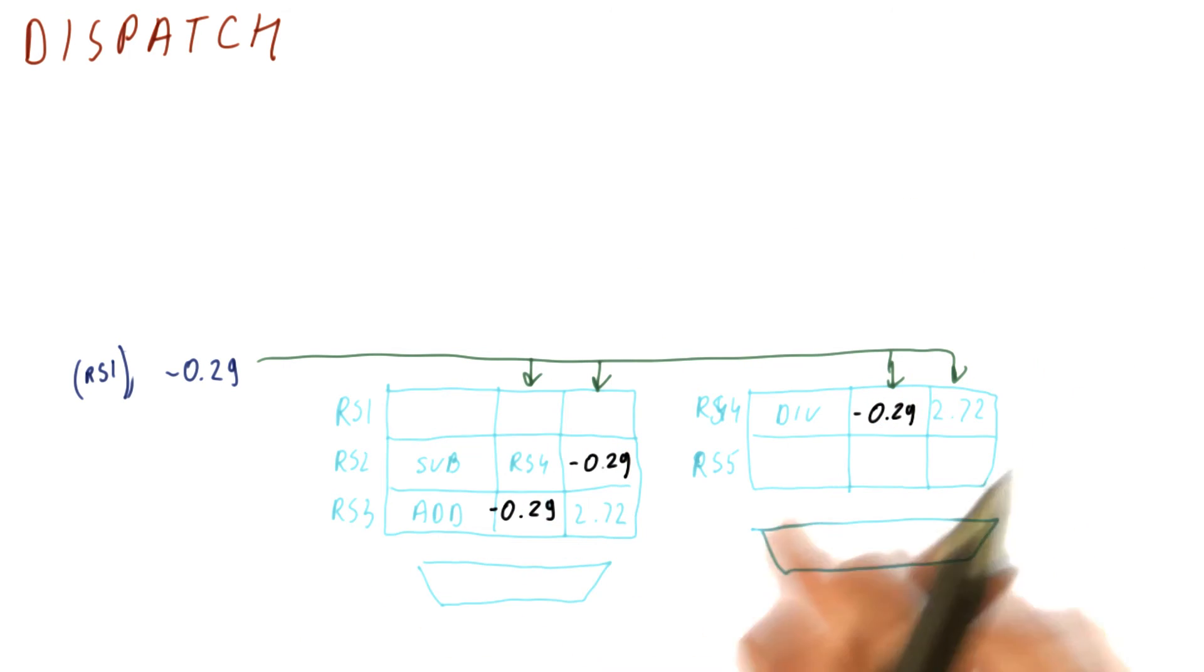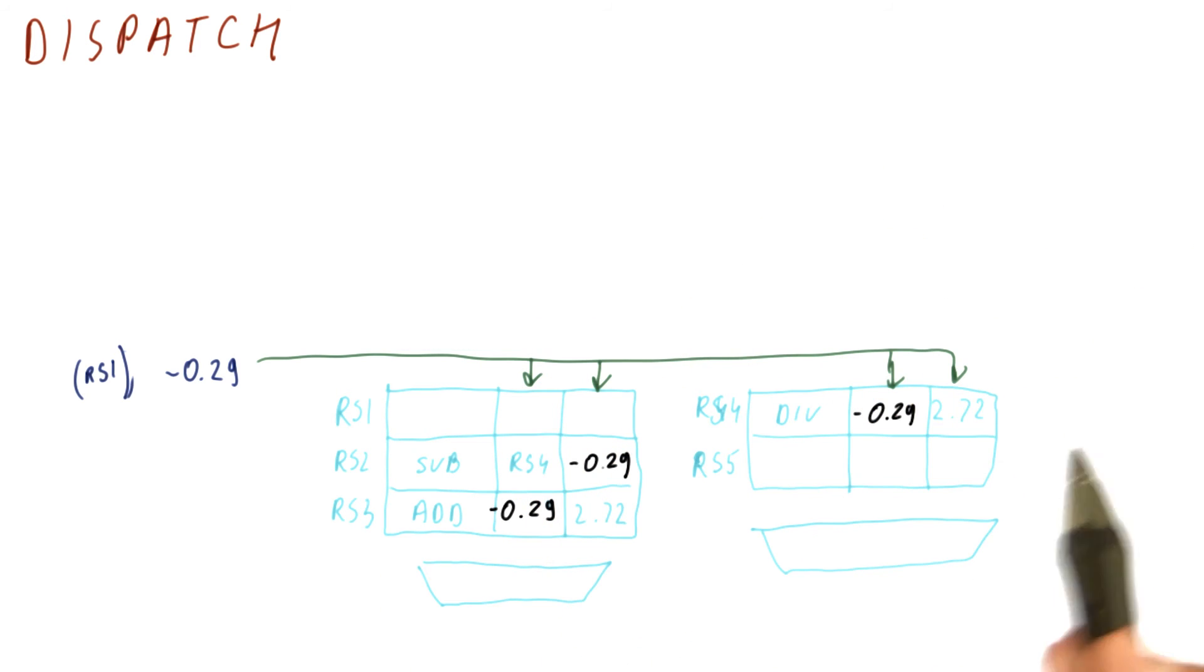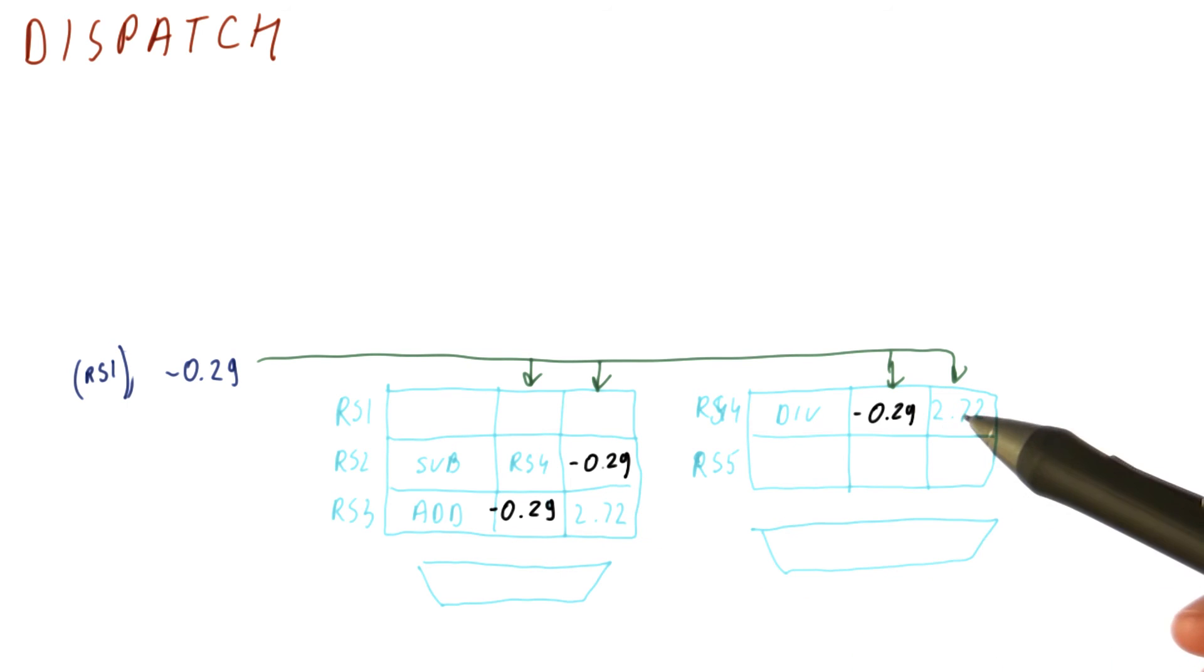So this completes basically what happens when a result is being broadcast as far as reservation stations are concerned. Now we need to consider which reservation stations have all of the operands ready to go. This one doesn't, this one does, and this one does.